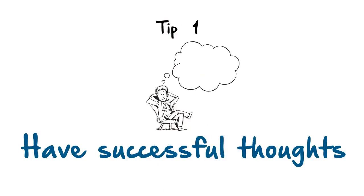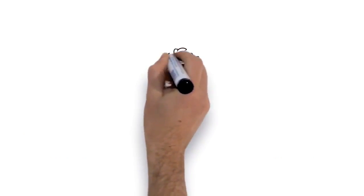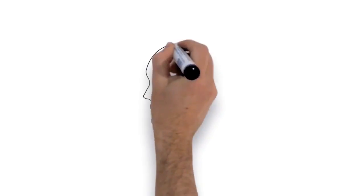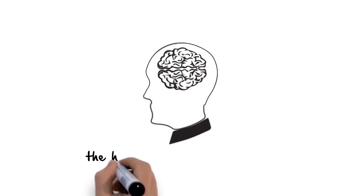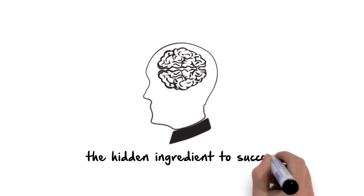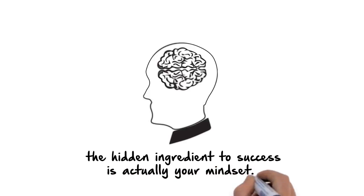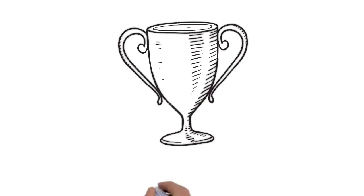Tip 1: Have Successful Thoughts. As much as it may feel that external circumstances are holding you back, the hidden ingredient to success is actually your mindset. Examine your current thoughts about what you want to achieve and decide to hold thoughts that will help you achieve it.